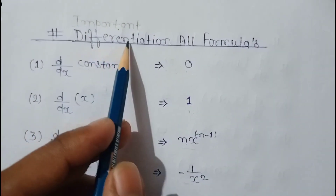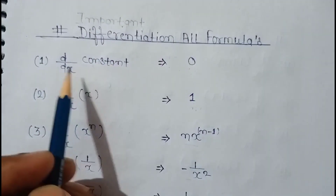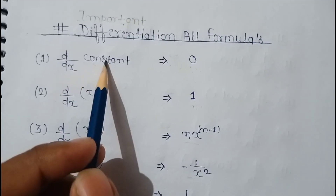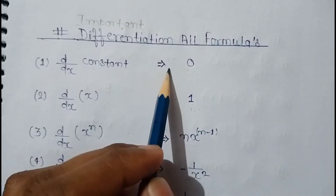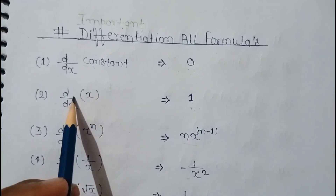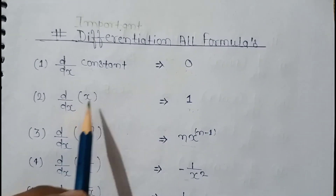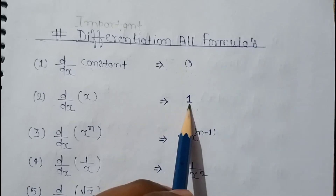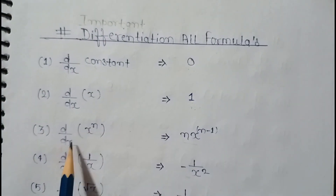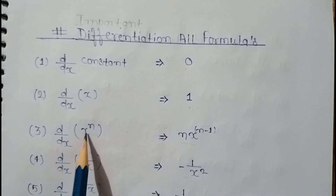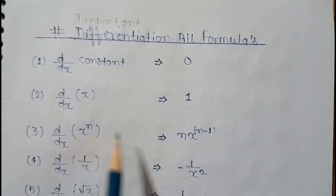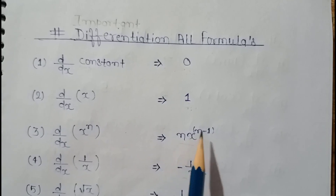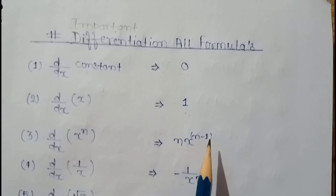Important differentiation formulas: d by dx of a constant is equal to 0. d by dx of x is equal to 1. d by dx of x to the power n is equal to n into x to the power n minus 1.